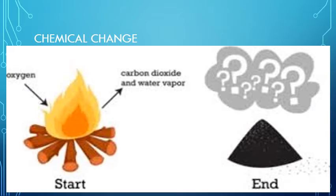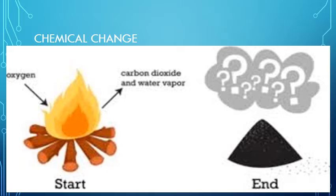Now we have the chemical change. What happens in a chemical change? A new substance is formed. In the chemical change, a new substance is formed and we can't get back the original substance. Any change which results in the formation of a new substance is called a chemical change.